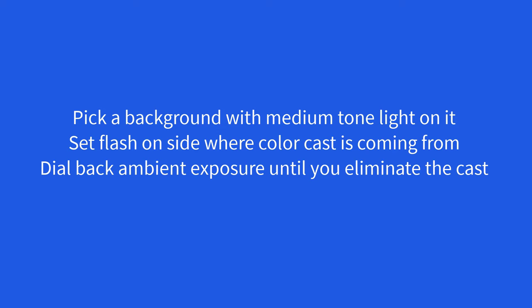Pick a background with medium tone light on it, set the flash on the side where the color cast is coming from, and dial back ambient exposure until you eliminate the cast. And if you don't have a cast, this system works great anyway. It's a very simple system to use. I'm Dave, L. David Likes Photography.